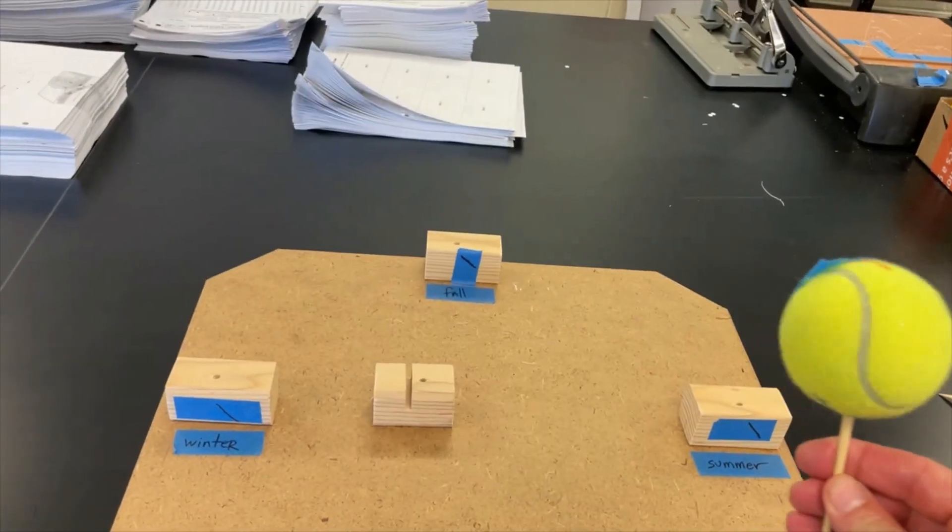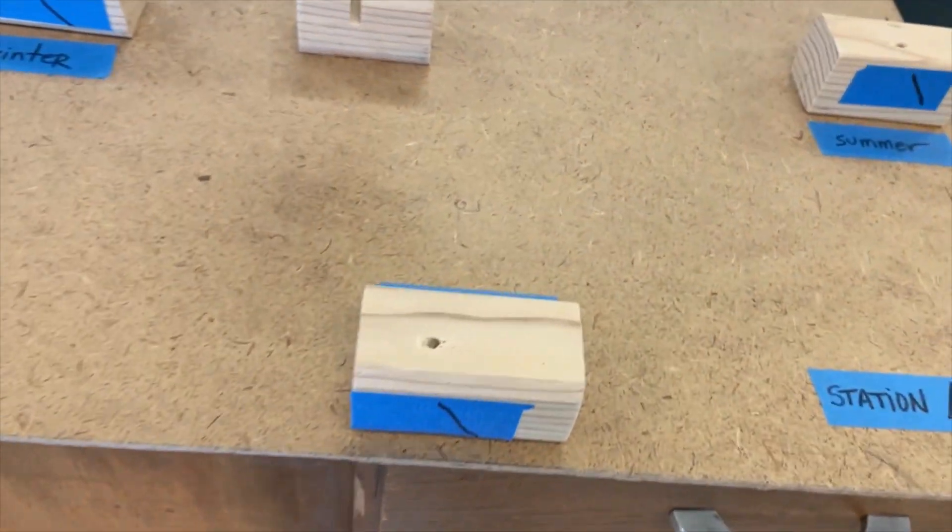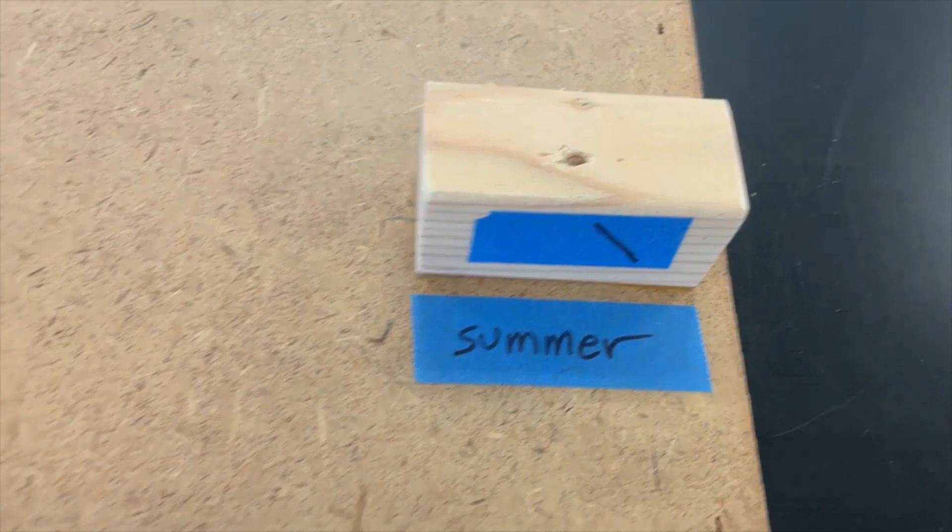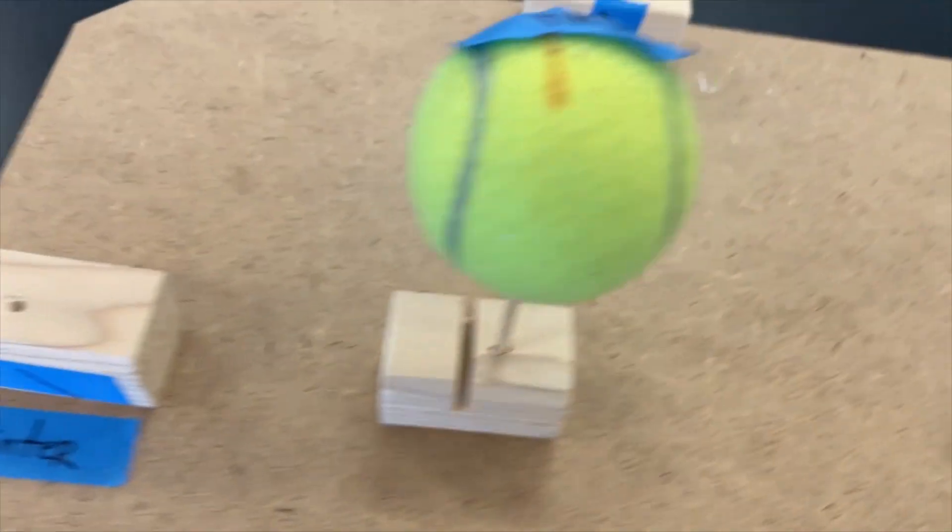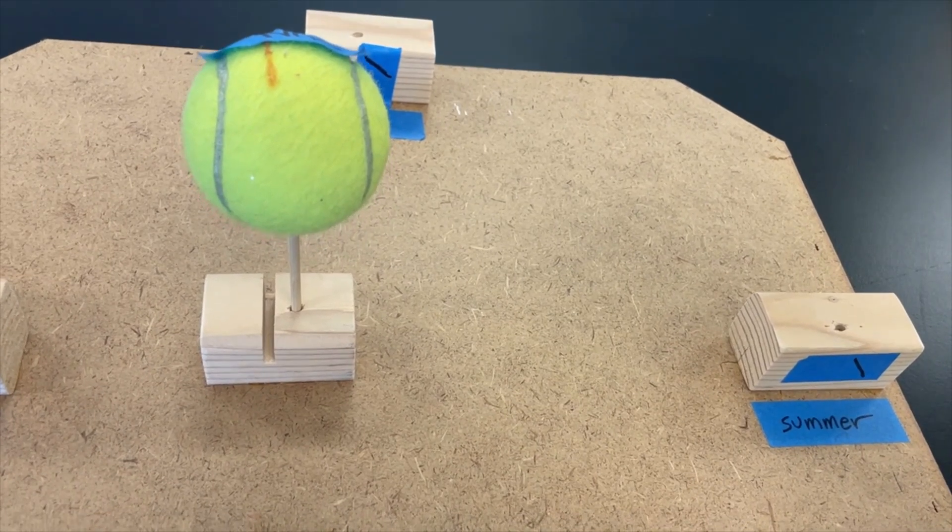So this is just how it works. I used tennis balls for the Sun, just really using materials that I had around, like in the classroom and at home. Then I have summer labeled there, winter there, and this is a lab station that they do.